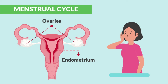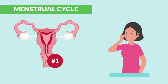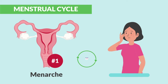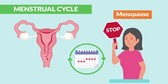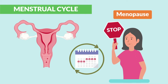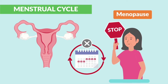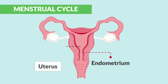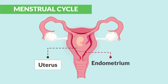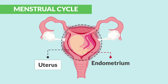It begins at puberty. The first period is known as menarche, and it continues every single month until menopause kicks in, around 50 to 55 years old. Then the periods cease to continue. More specifically, the endometrium is the layers of tissue that line the uterus, which I call the baby condo, since it houses the baby fetus during pregnancy.